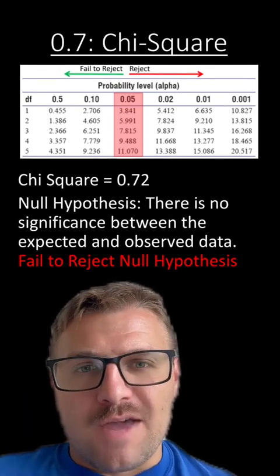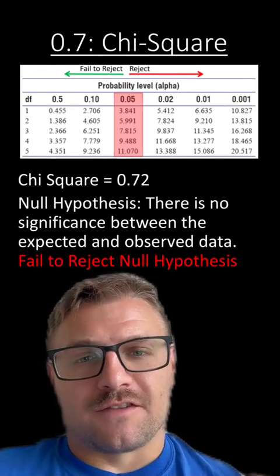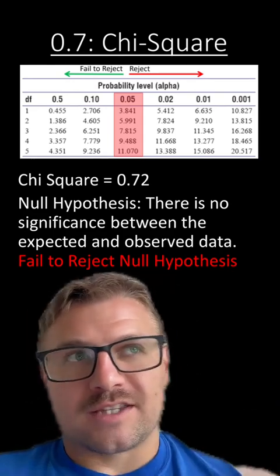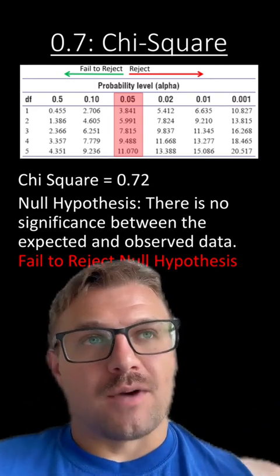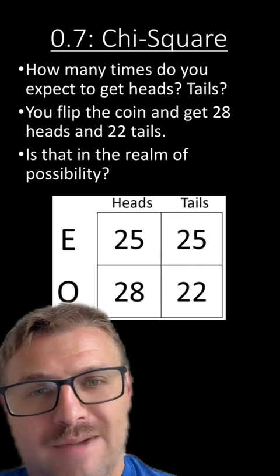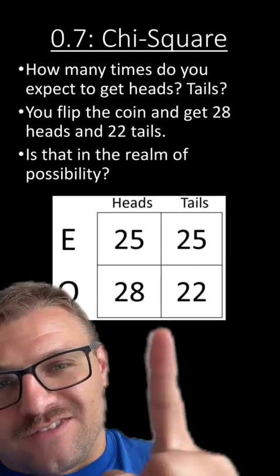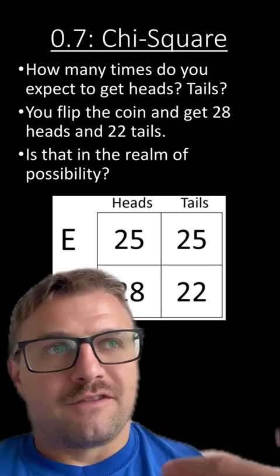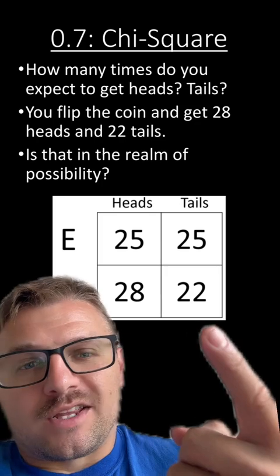And that should make sense. The null hypothesis states there is no significant difference between the expected and observed data. We fail to reject that. We can't say that that null hypothesis is wrong. Looking back on our data, yeah, this does kind of seem like it falls in the realm of possibility. If you flip a coin 50 times, yeah, there's a chance it's 28 and 22.